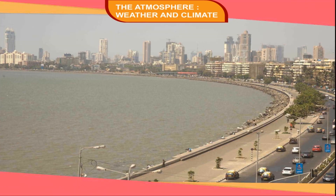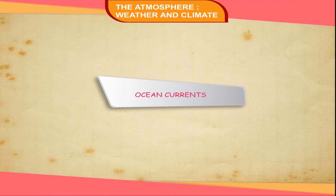Distance from the Sea. The places near the sea or any large water body never experience extremes of temperature; they always remain mild or moderate. Such a climate is called maritime. The places that are away from the sea experience extremes of temperature; these places have a climate called continental or extreme. For example, Mumbai has a maritime climate while Delhi has a continental climate.